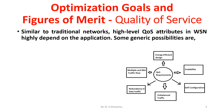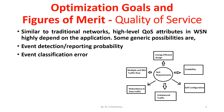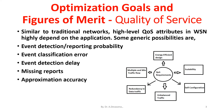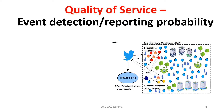High-level quality of service attributes in wireless sensor networks highly depend on the application. Some generic possibilities are: event detection or reporting probability, event classification error, event detection delay, missing reports, approximation accuracy, tracking accuracy, and event detection/reporting probability.